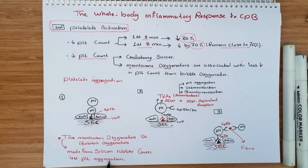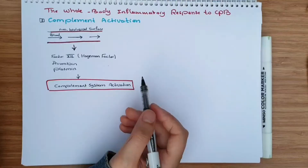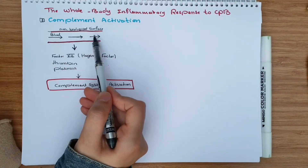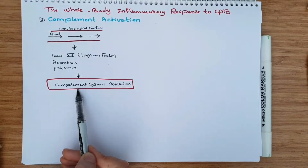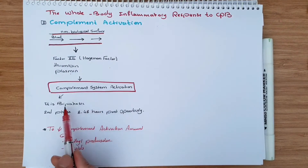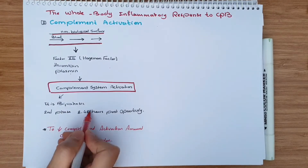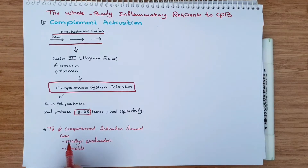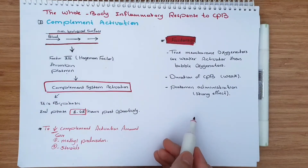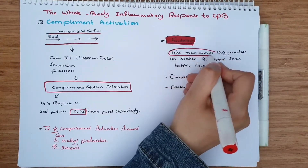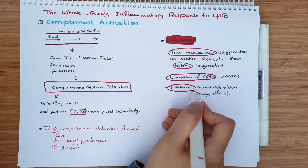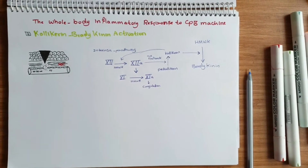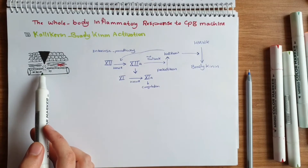Then I will go to complement activation. When the blood is exposed to non-biological surfaces, with the help of factor 12, thrombin, and plasmin, it causes complement system activation. This is biphasic — the second phase takes place 8 to 48 hours postoperatively. We can reduce this effect by giving methylprednisolone and steroids. Factors affecting complement activation include membrane oxygenators (weaker than bubble oxygenators), duration of cardiopulmonary bypass, and protamine administration.